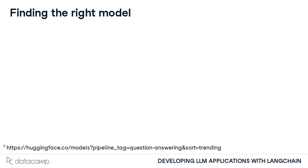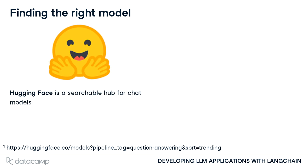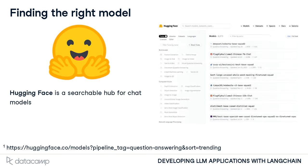Besides OpenAI's chat models, thousands of chat-optimized language models are available in LangChain via the HuggingFace Hub API. To find language models specifically optimized for chat, search the chat model section of HuggingFace and filter on Question Answering. Then take note of the model name so it can be referenced in the code.